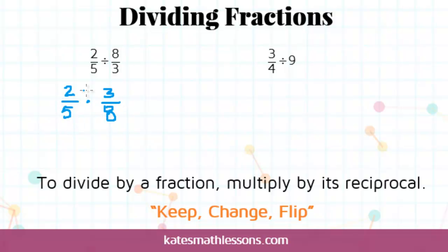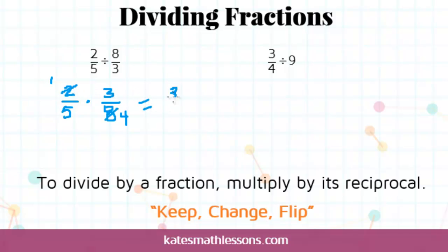Once you've changed it to a multiplication problem, you just use the rules for multiplying fractions. When you're multiplying fractions, you can multiply straight across first and then simplify, or you can simplify at the beginning. I usually tend to simplify at the beginning because then I'm dealing with smaller numbers when I multiply. I can see that this 2 and the 8 are both even numbers, so I can divide them both by 2 before I multiply. Now I can multiply straight across: 1 times 3 is 3, and 5 times 4 is 20. So the answer to this first one would be 3/20.